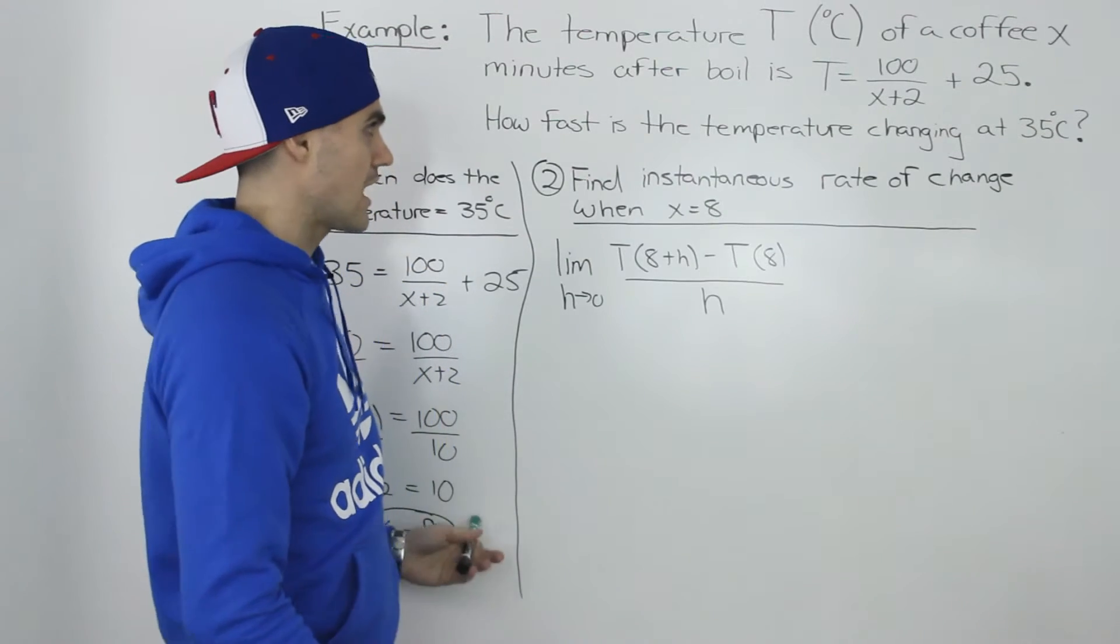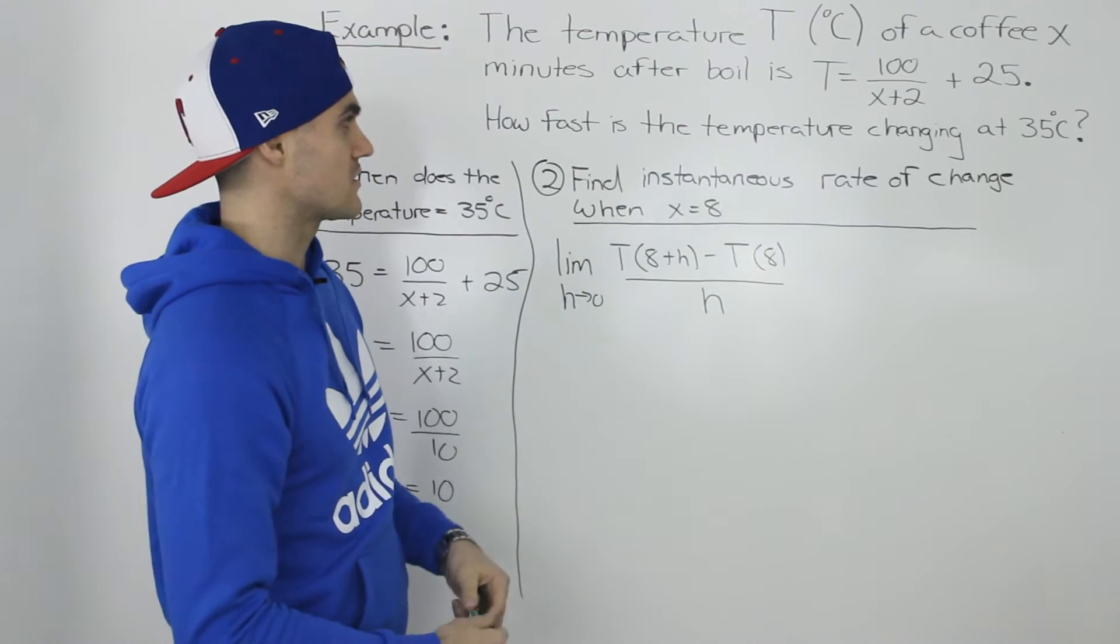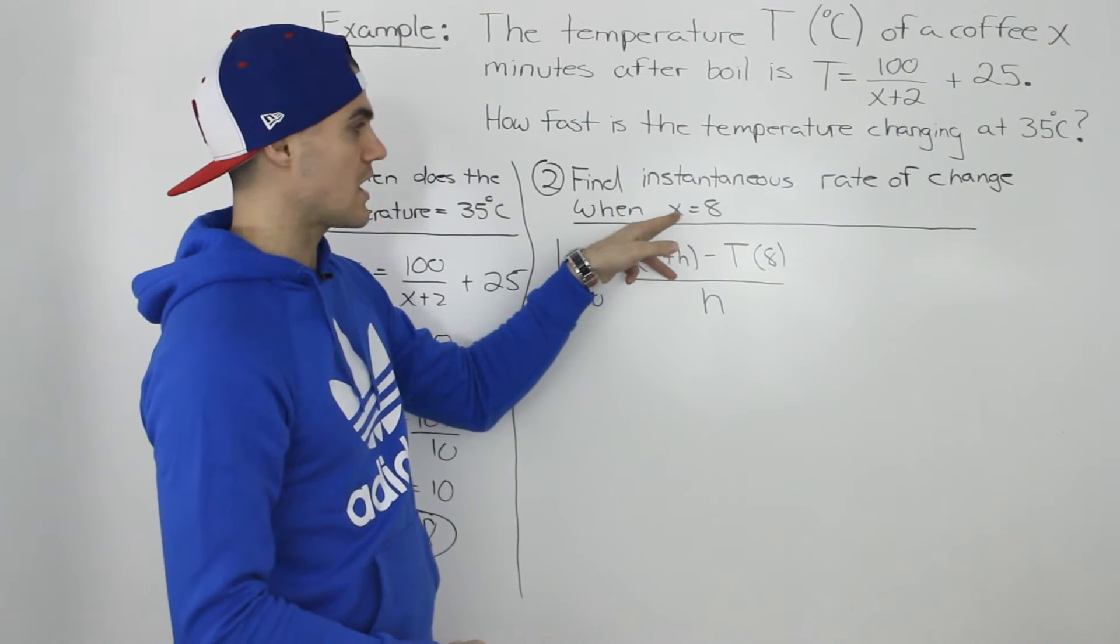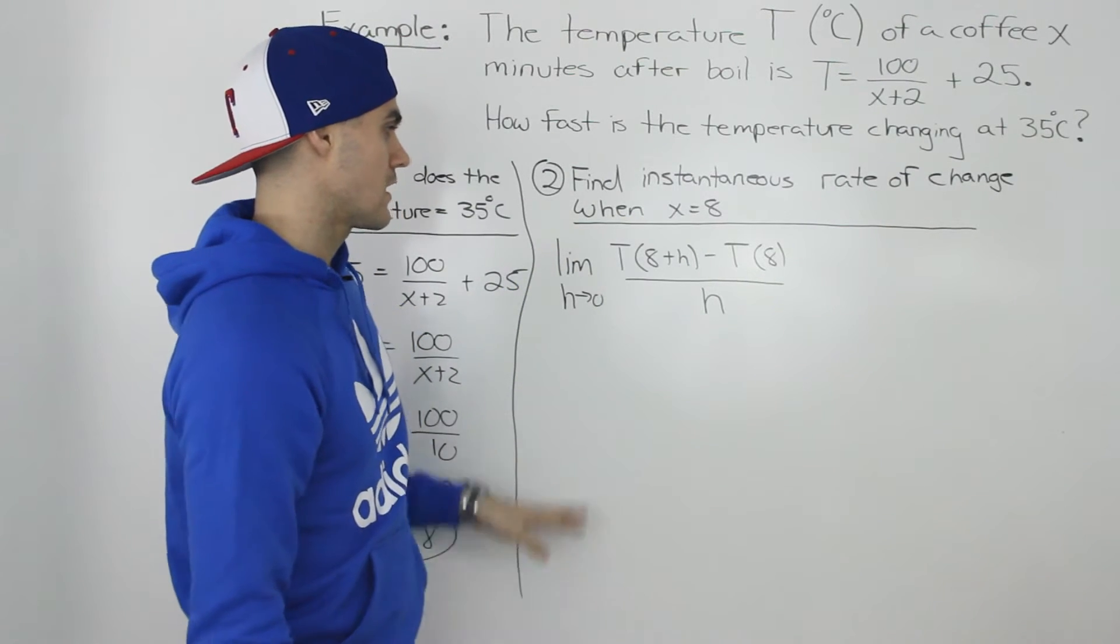And now since we know the time at which it hits 35 degrees Celsius, we could find the instantaneous rate of change at that specific point in time when x is equal to 8. And to do that,